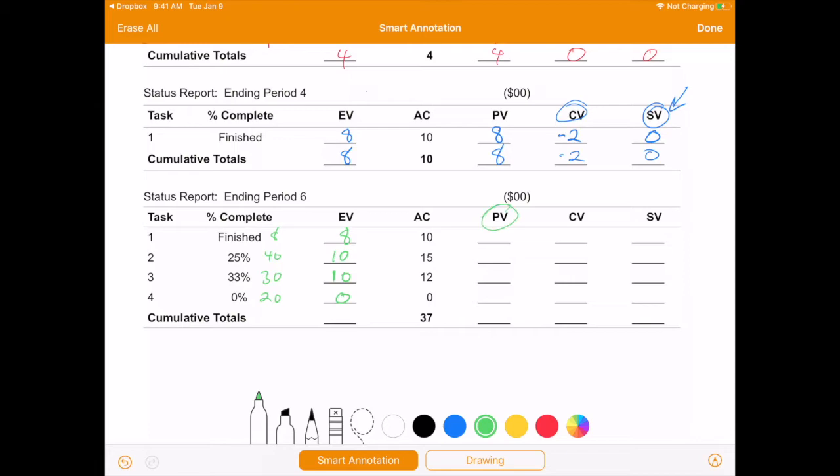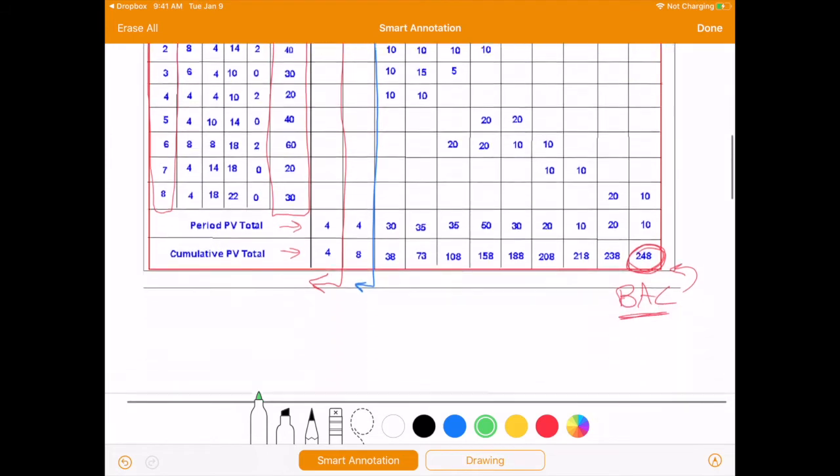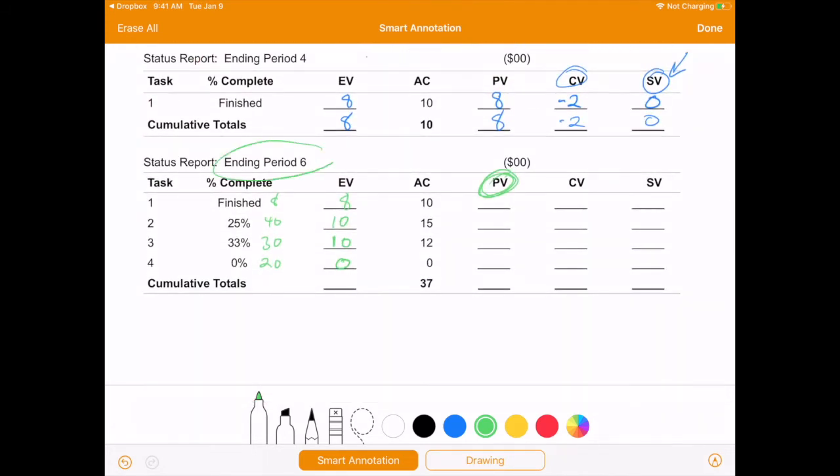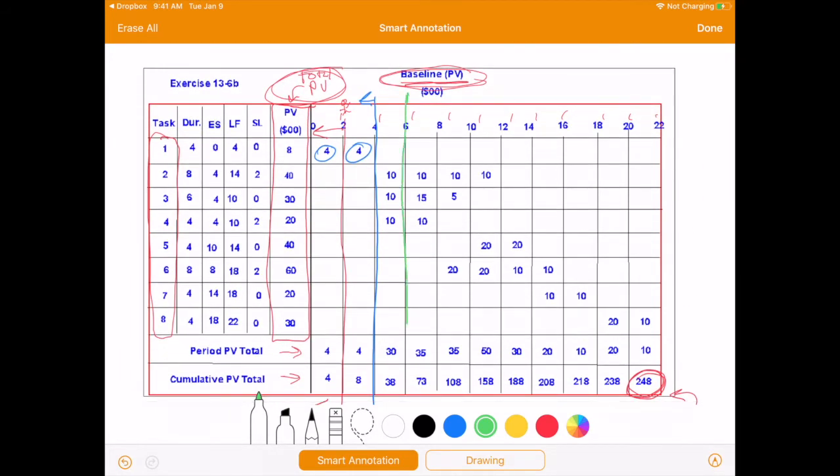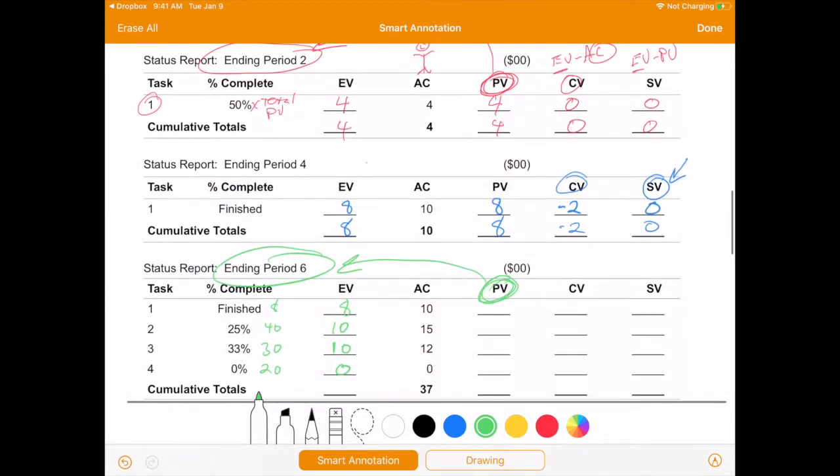Now, what we need to do for PV before we can do these final calculations is actually go back up here. And this time, we're at the end of period 6. So it's the PV at the end of period 6. We're going to come up here and we are going to look here. I was planning to spend 4 plus 4 is 8, 10, 10, and 10, it looks like. We're looking at all these and adding them up. And so it looks like this would be 8, 10, 10, and 10.